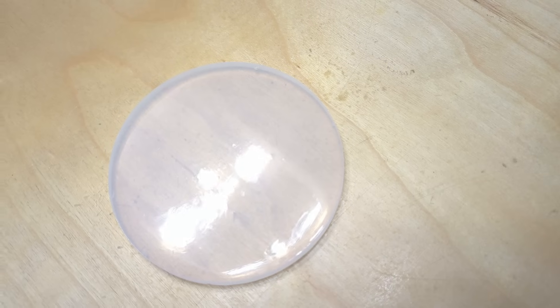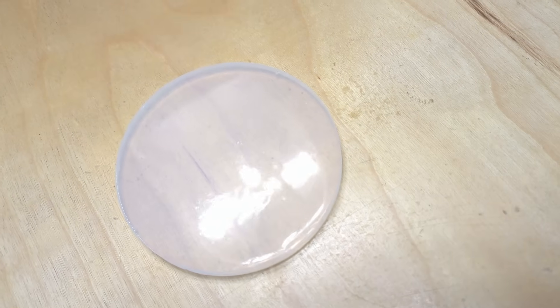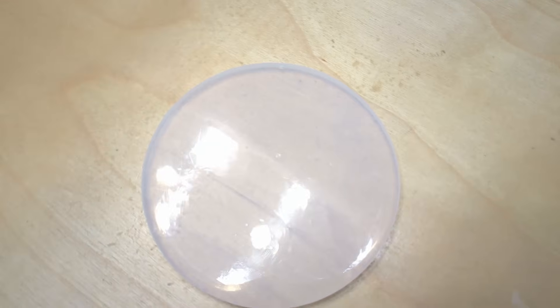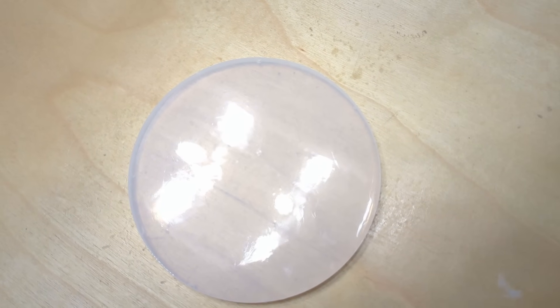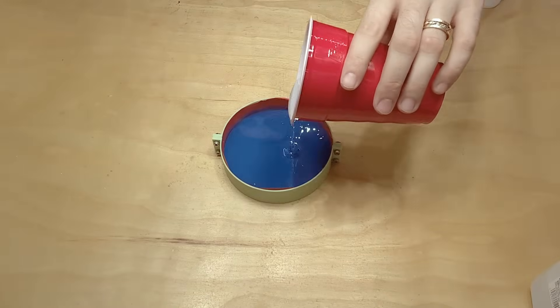Unfortunately, it had the same surface waviness as the first silicone. Since this new silicone casting wasn't any better, I decided I'd just stick with the first one. So I put the mold together and poured in some resin.